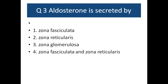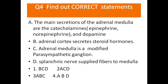Question number four: find out the correct statements. A) The main secretions of adrenal medulla are the catecholamines and dopamine; catecholamines include epinephrine and norepinephrine. B) The adrenal cortex secretes steroid hormones. C) Adrenal medulla is a modified parasympathetic ganglion. D) Postganglionic nerve supply fibers to the medulla. Options: BCD, ACD, ABC, or ABD.